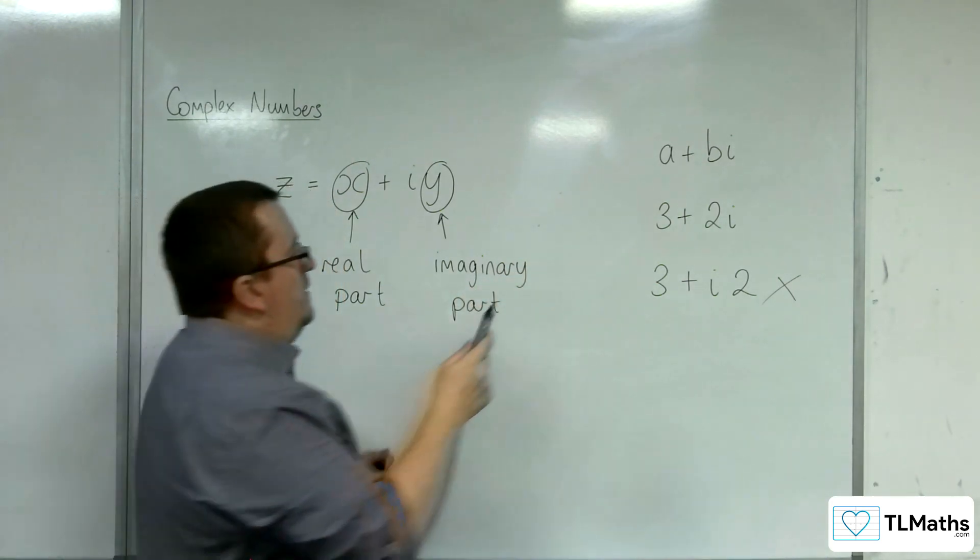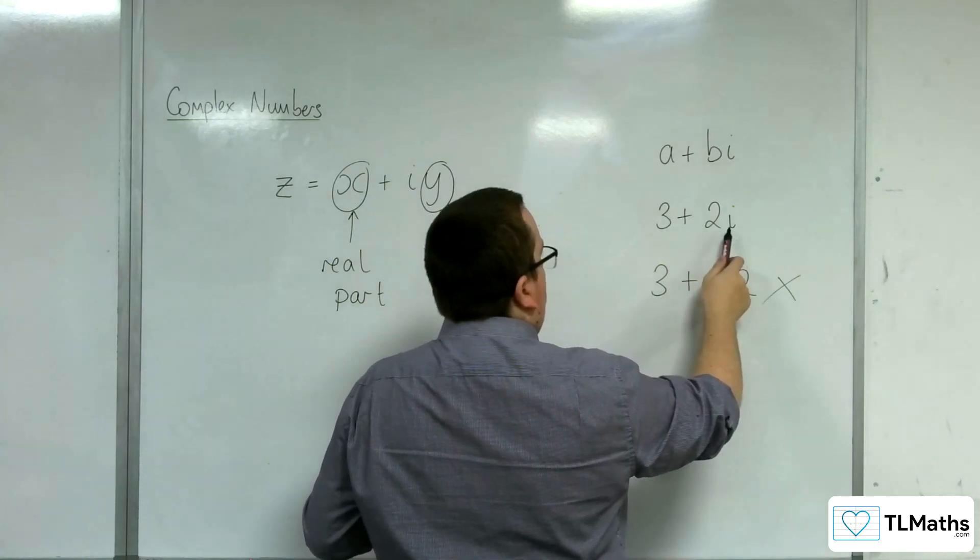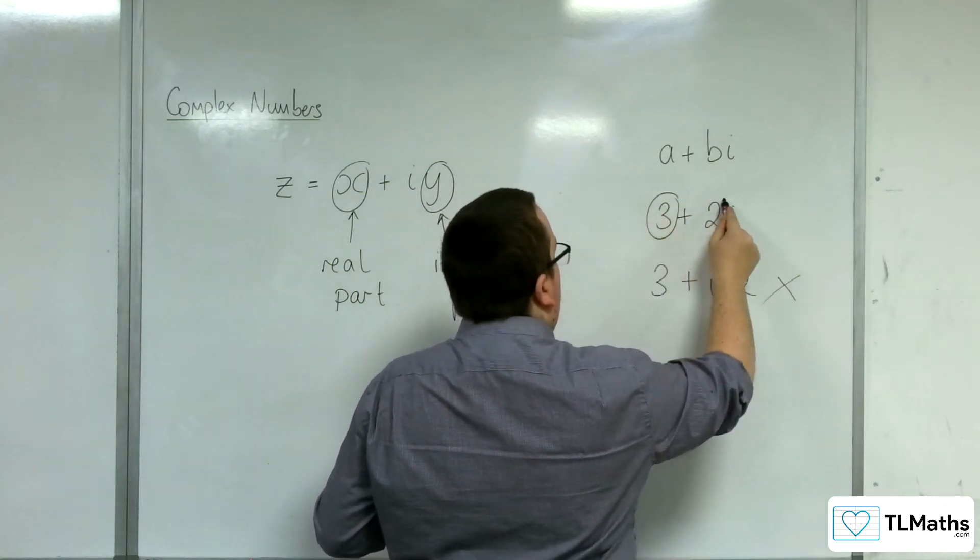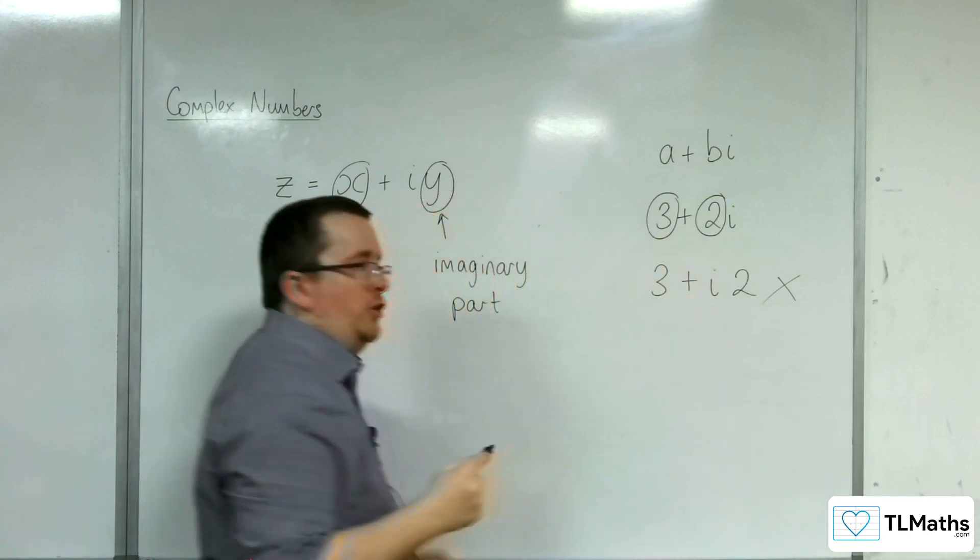So here, in the number 3 plus 2i, 3 is the real part, 2 is the imaginary part.